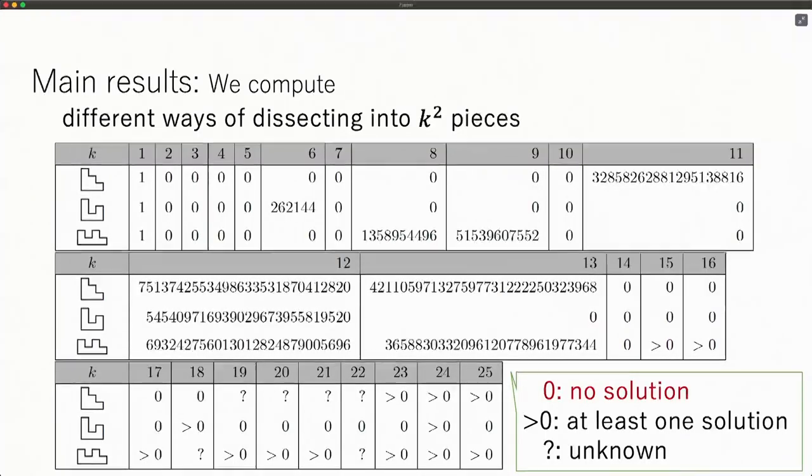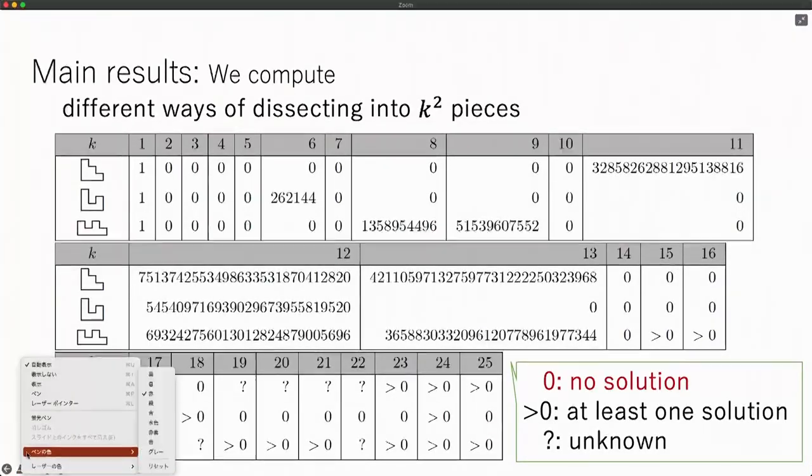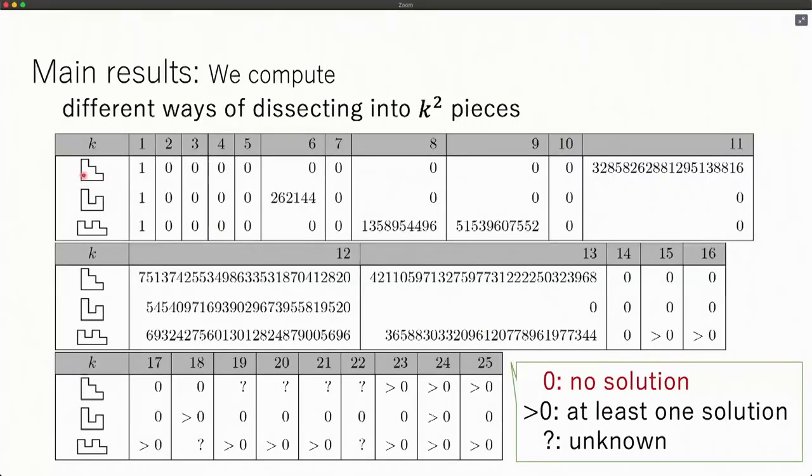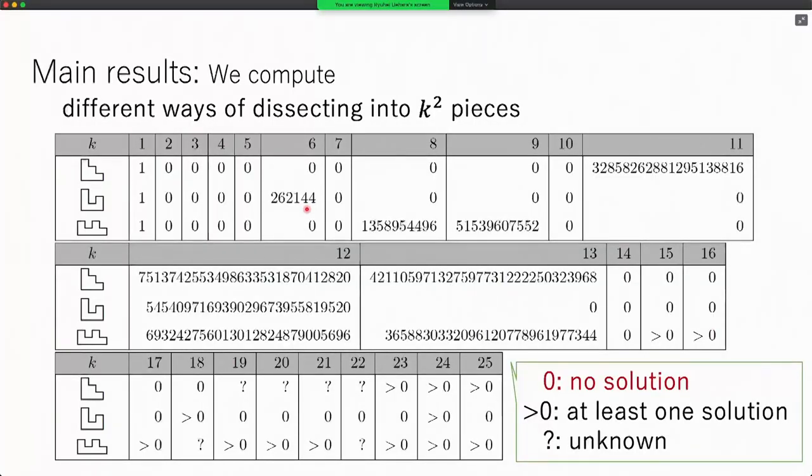This is a table of our main results. You can see that for each three patterns, when you dissect into this number, in this case six (which means square numbers, six squared equals 36), when you make 36 copies of this pattern, you have 2,614,144 ways of dissecting. These are the numbers of different reptiles you can obtain.